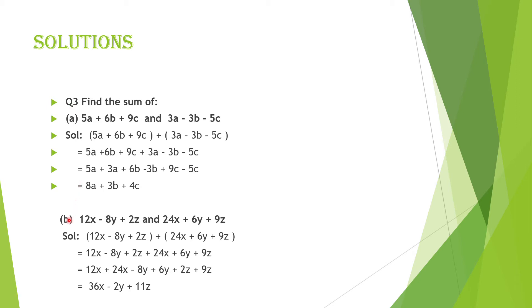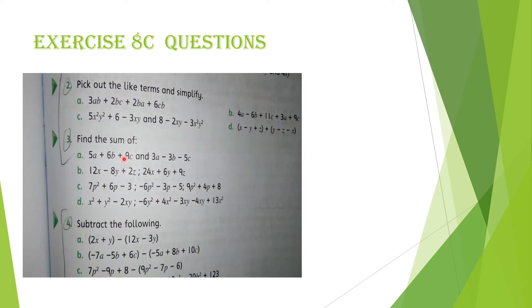Is exercise ke question number 3 ka A part aur B part karna hai — yeh dono horizontal method se karne hain. Aap chahen to vertical method se bhi karke mujhe send kar sakte hain. Question number 3 ke dono parts mein expressions di hain — aapne dono expressions ko horizontal method se add karna hai.